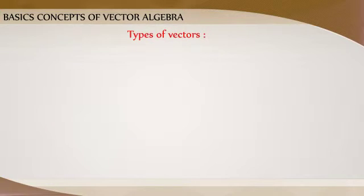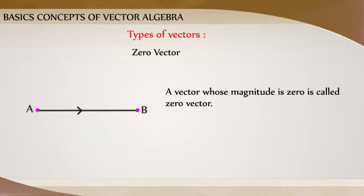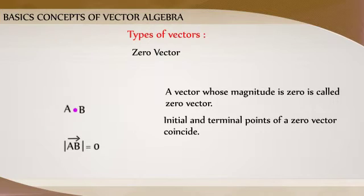Types of Vectors: A vector whose magnitude is zero is called a zero vector. Initial and terminal points of a zero vector coincide.